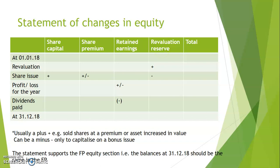Then you have revaluation reserve. If an asset is revalued, that figure comes into the revaluation reserve column. If premises or land go up in value, it's shown in non-current assets, and the revaluation section shows the same figure — that's double entry. You debit NCA because premises and land go up, and then you credit revaluation reserve. You can't just show land going up; you've got to show the same in revaluation.